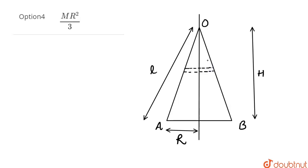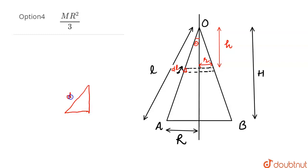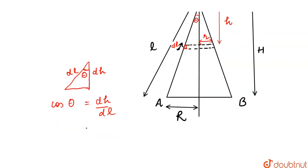We have taken this differential element. Let's say this element has height dH, and the radius of this small element is r, and the height from the apex is small h. Let's say this angle is theta. Looking at this small triangle — let me make a magnified view — this small length is dL and this angle would also be theta. So cos theta equals dH upon dL, or we can write the slant height element as dH divided by cos theta.